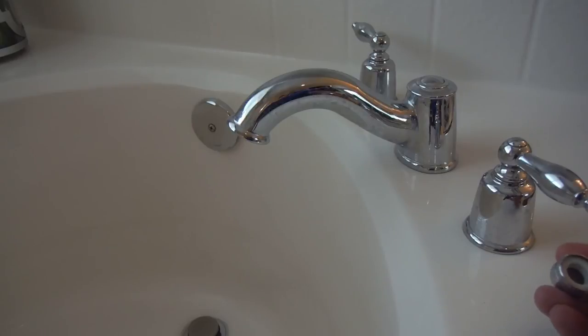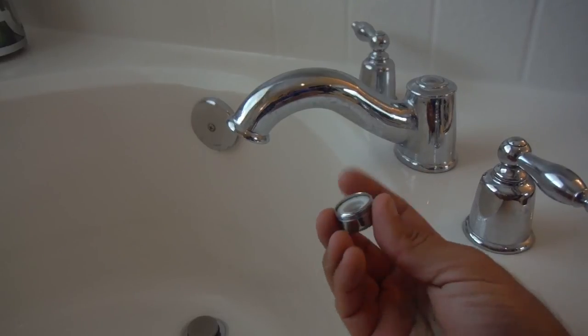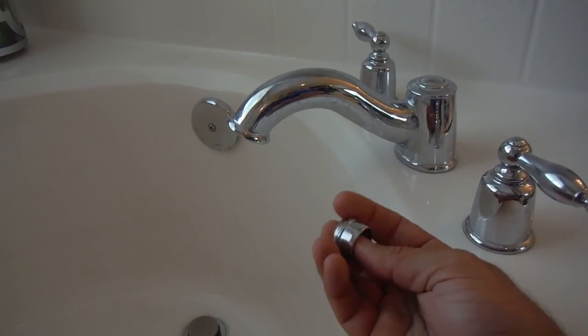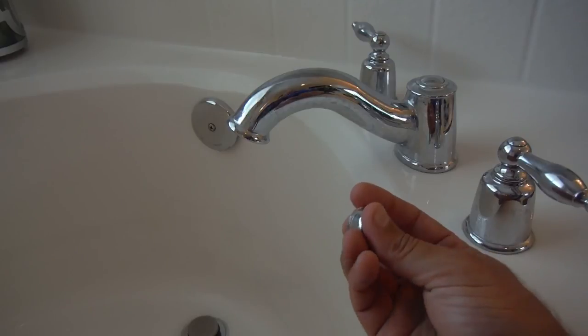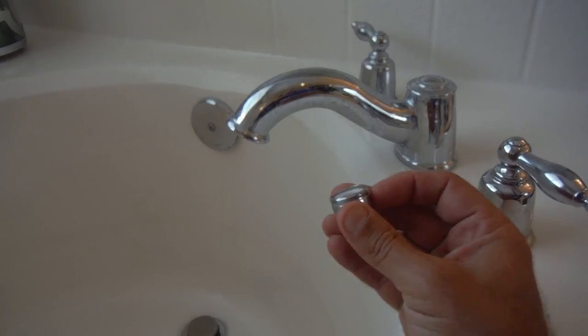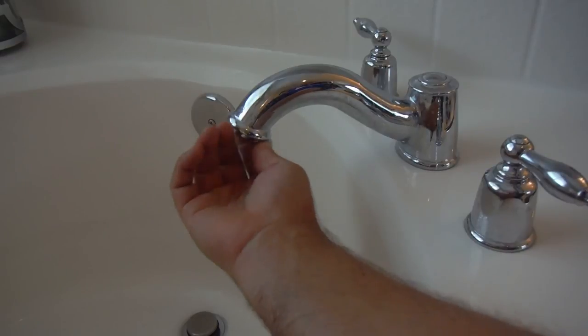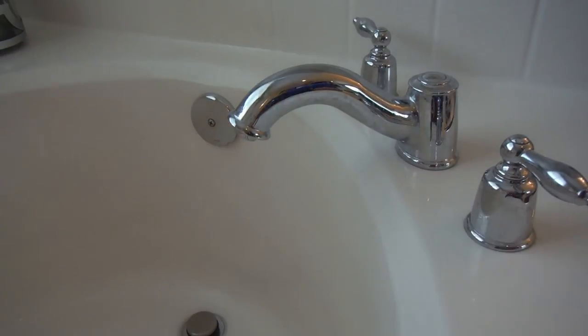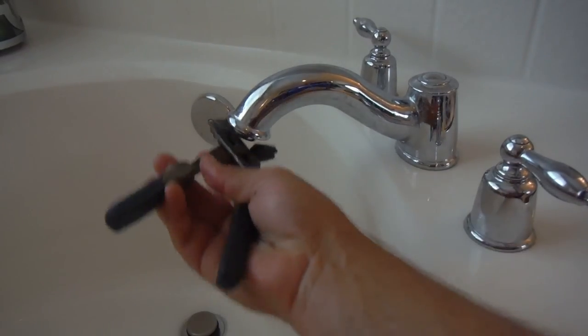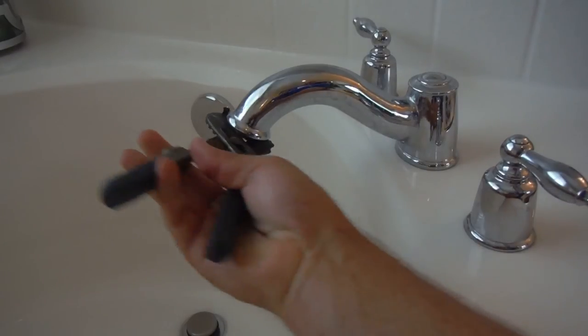Okay, after letting that sit in some vinegar for a while, got it all cleaned up. The screen is clear now and you just put it back together and thread it back up into the faucet here. We use those pliers to make sure that it's nice and snug.